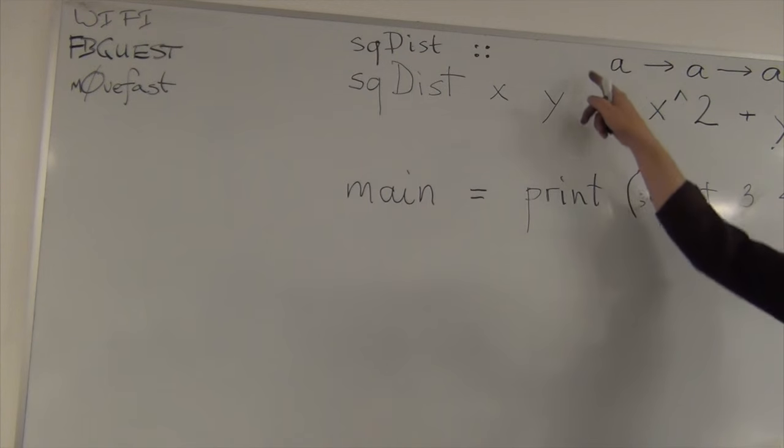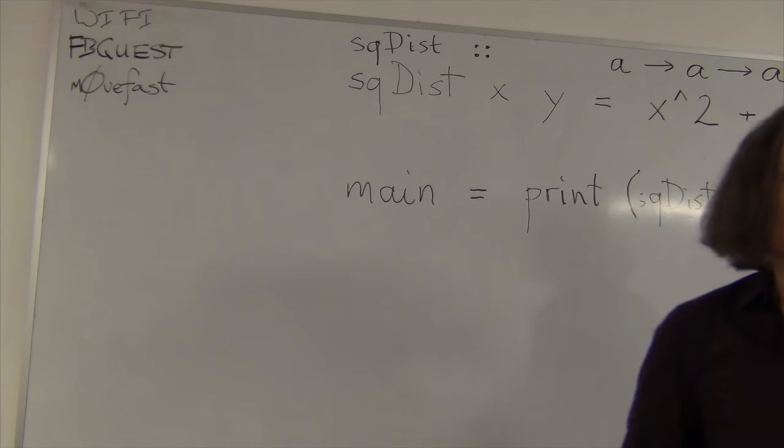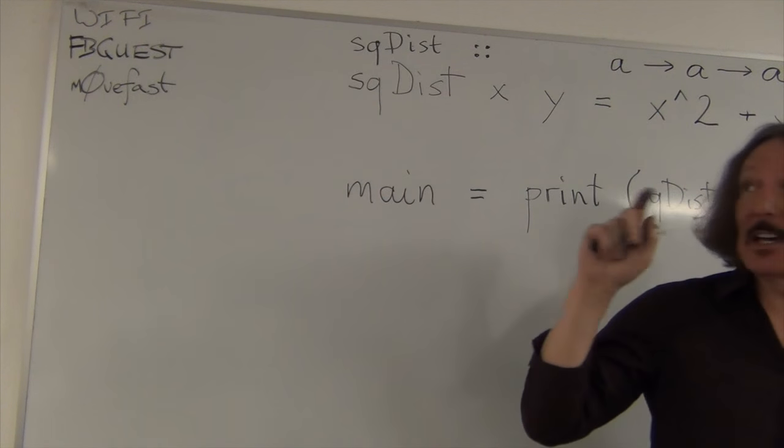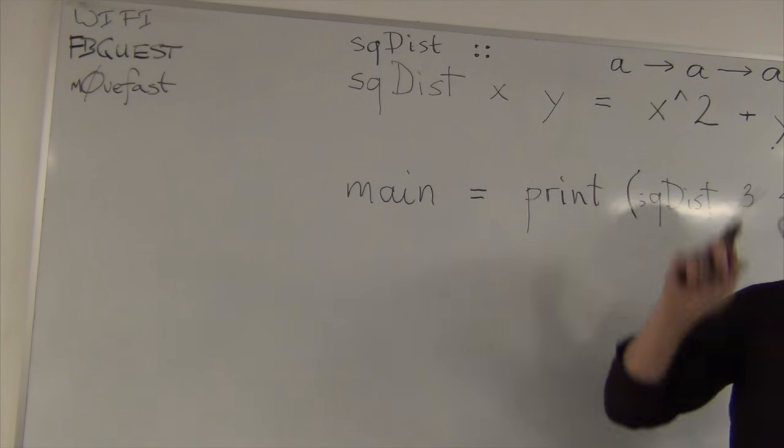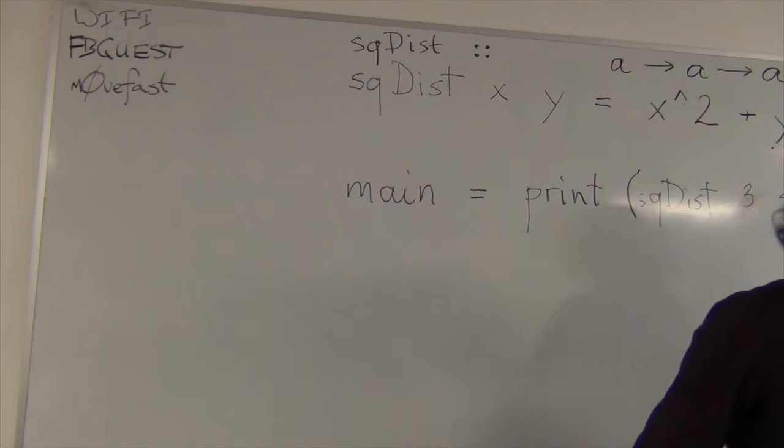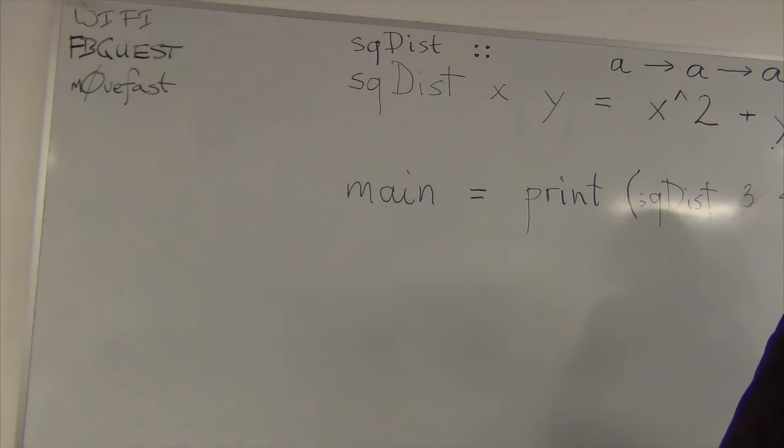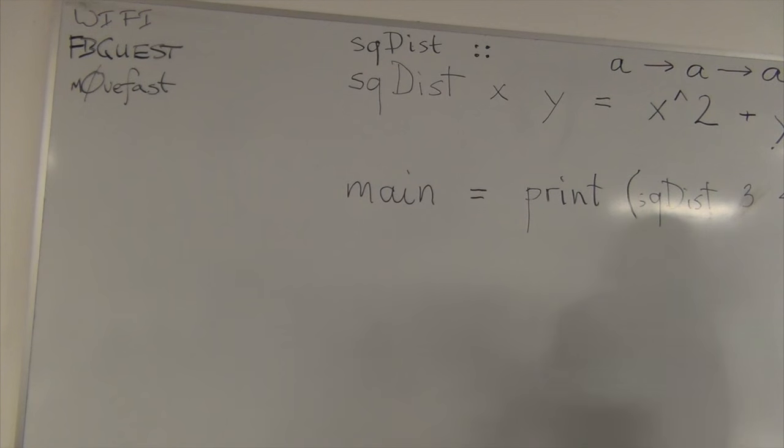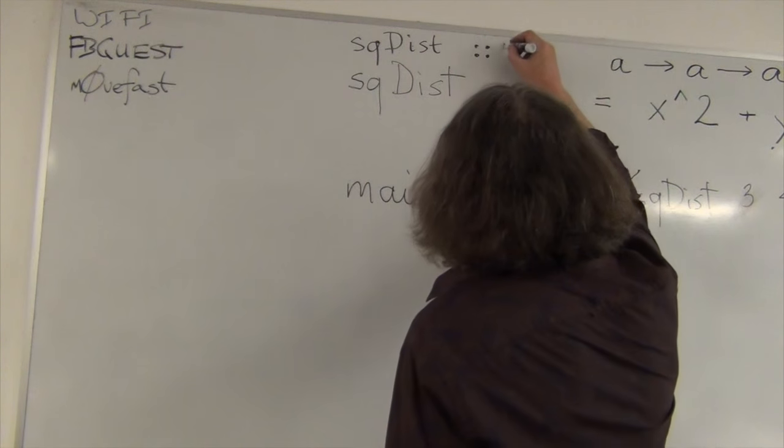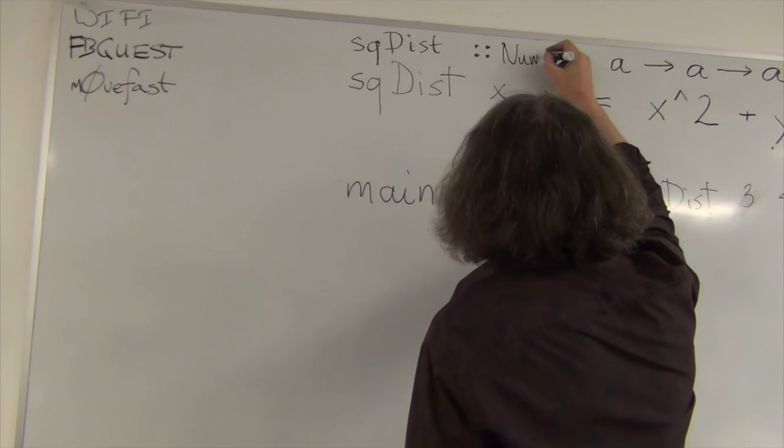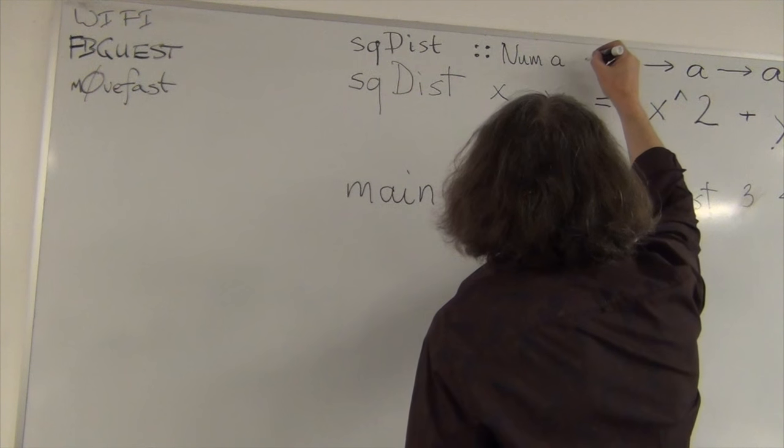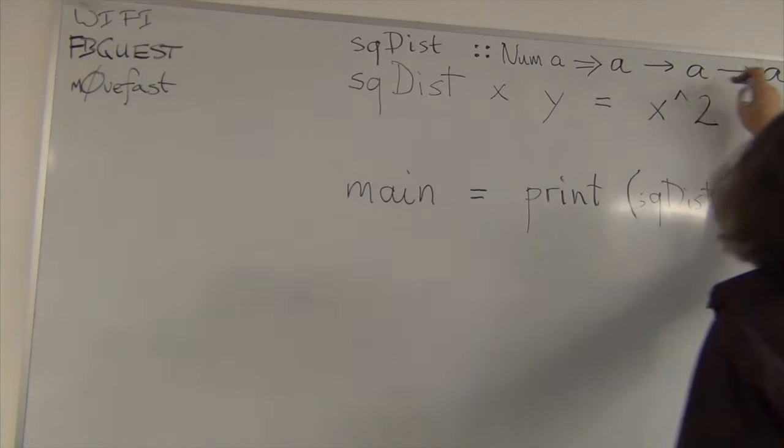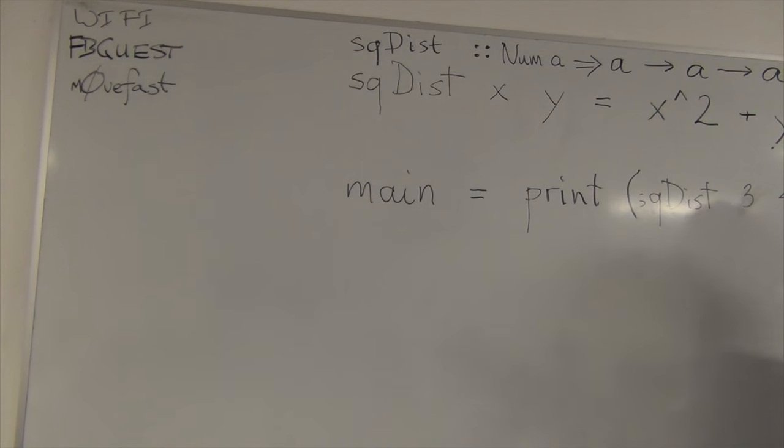Because it knows that there are many types for which the square is not defined. Okay? These are bad types. Okay? So, it has to insert something in here that says A is an arbitrary type, but it has to support square and it has to support plus. And there is a name for this family of types. It's called num. Right? So, it says num A arrow, double arrow, AA. So, you read this. Okay?